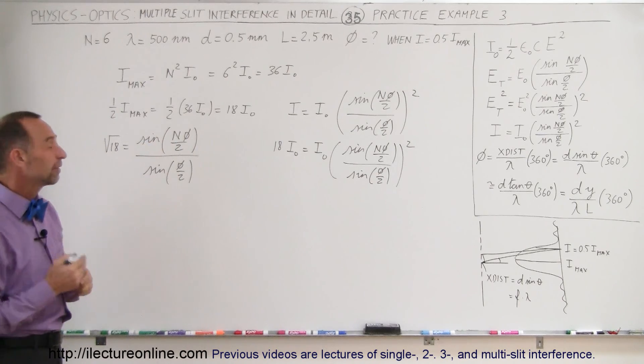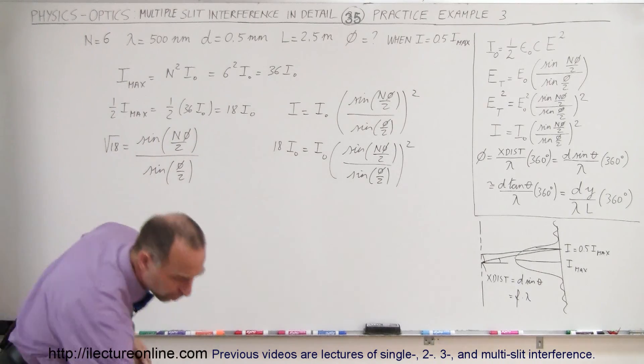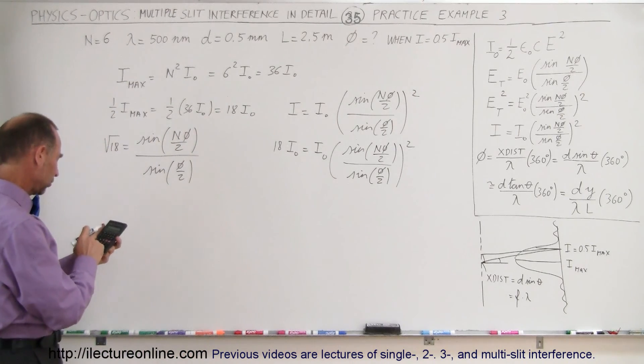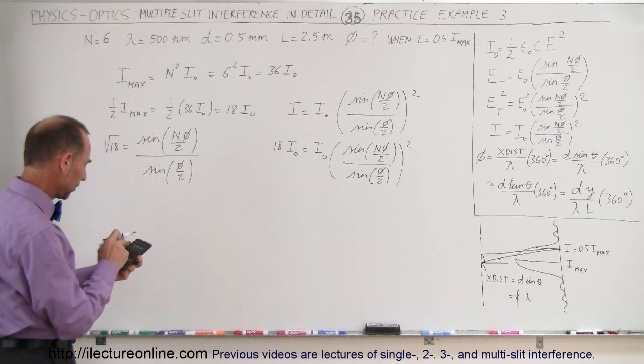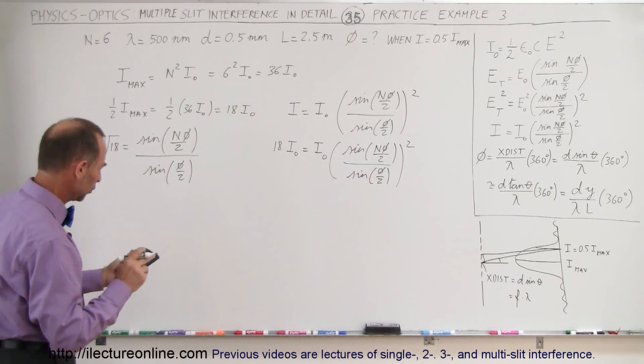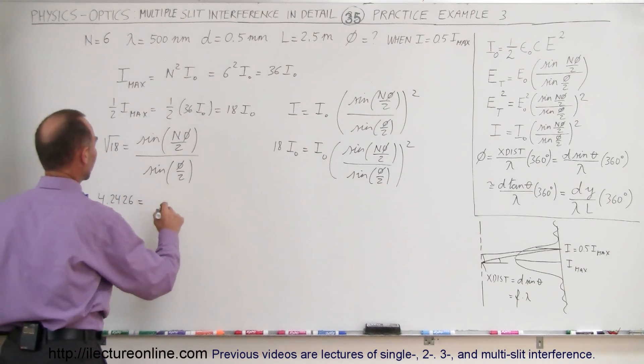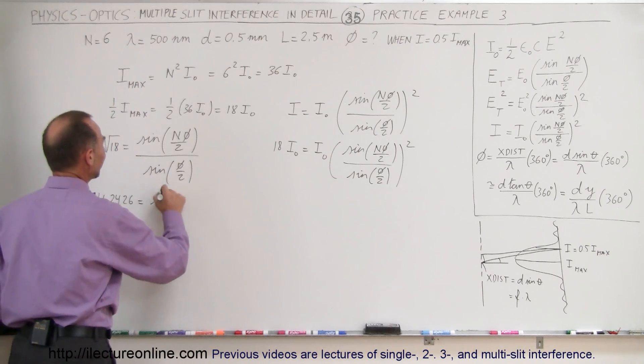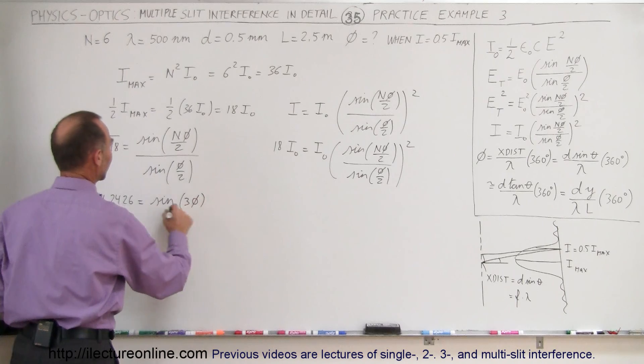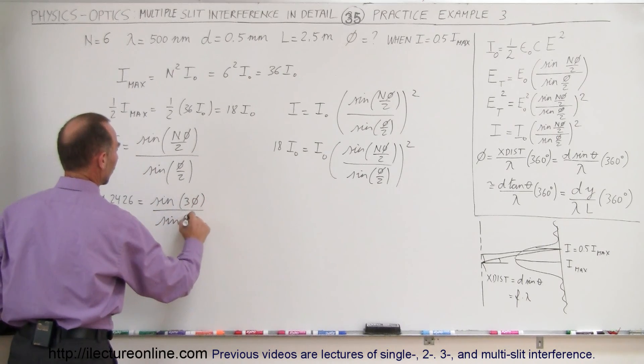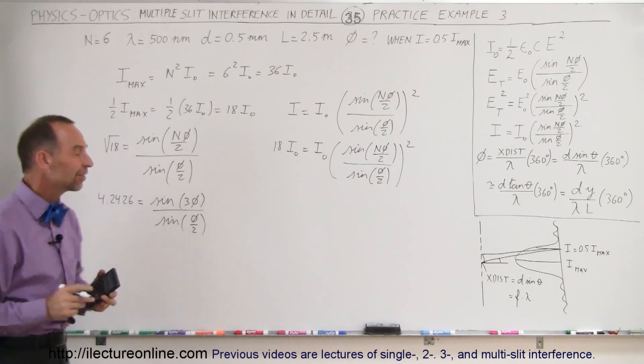Now we have a situation where we're trying to find phi in this case, and that is much more difficult to do. The square root of 18 is 4.2426, so 4.2426 equals the sine of, in this case n equals 6, so that would be sine of 3 times the phase difference divided by sine of phase difference divided by 2. So how do you find phi in this case?